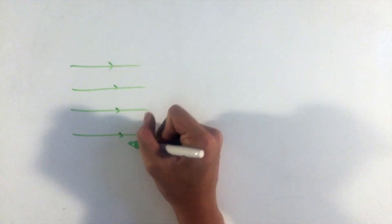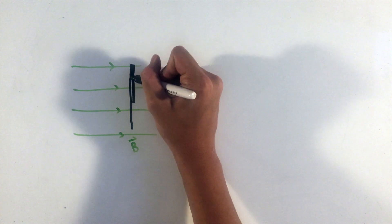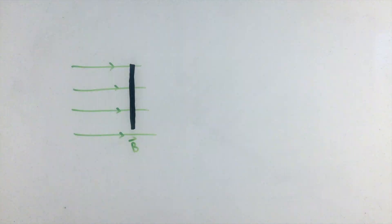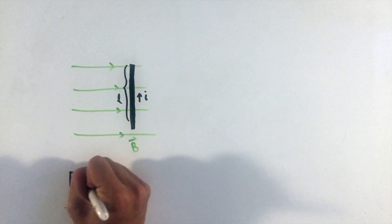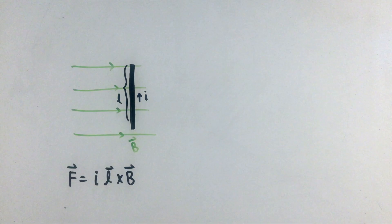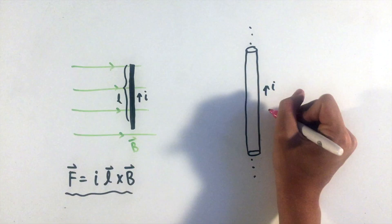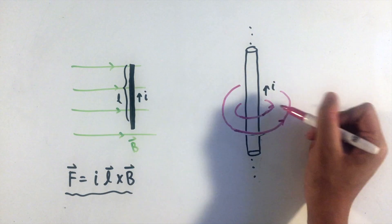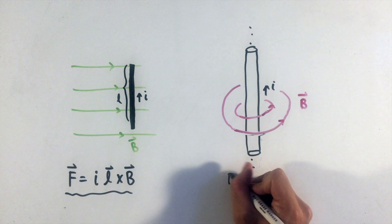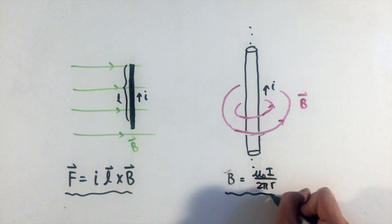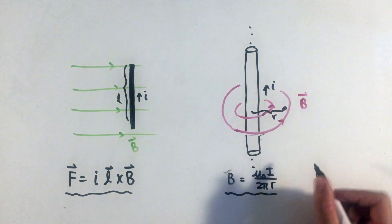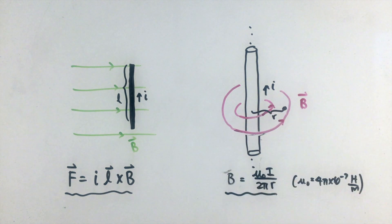Another type of object affected by external magnetic fields are current-carrying wires. For these objects, the force on them is given by an equation where the L vector is in the same direction as the current's direction. In fact, current-carrying wires actually produce magnetic fields of their own. For an infinitely long current-carrying wire, the magnetic field is given by an equation where mu-naught is the magnetic permeability of free space, which has a value of 4 pi times 10 to the negative 7th.